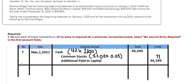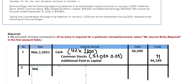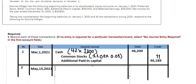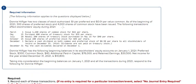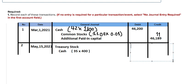Now we go to number two, which is about May 15, 2021. They purchase 400 shares of treasury stock for $35 per share. We debit treasury stock and credit cash: 35 multiplied by 400 equals $14,000.